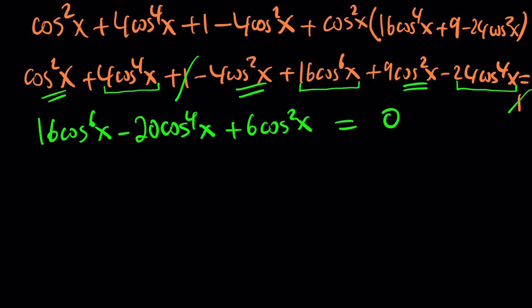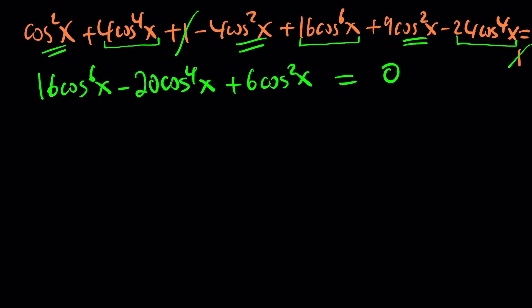This is not only nice, it's also very good in terms of factoring because we can factor out 2 cosine squared x. Inside we get 8 cosine to the fourth power of x minus 10 cosine squared of x plus 3. Great.